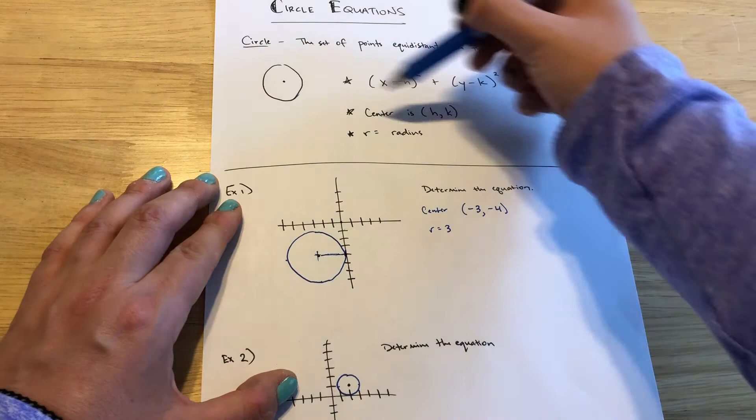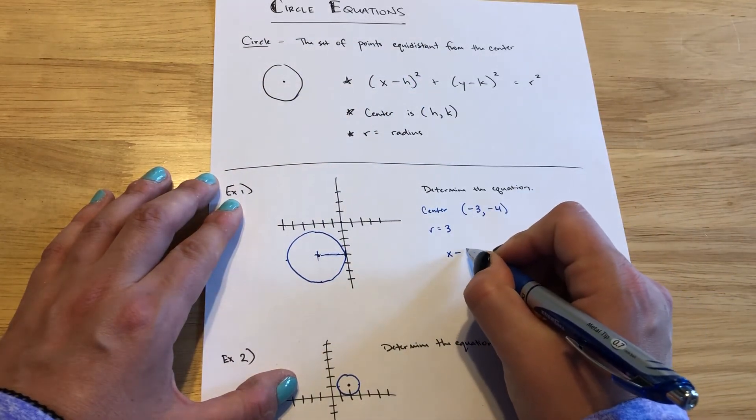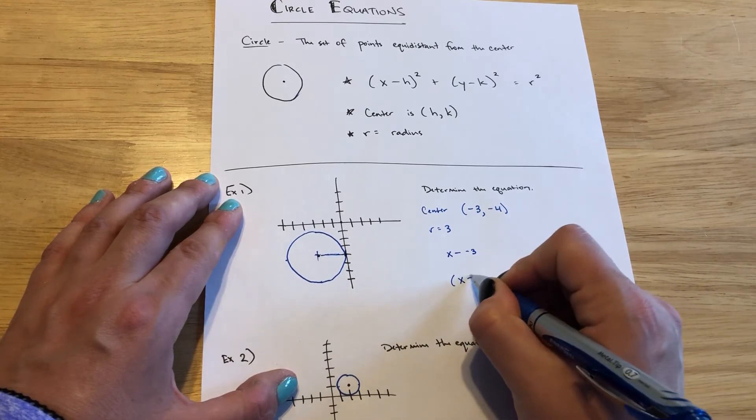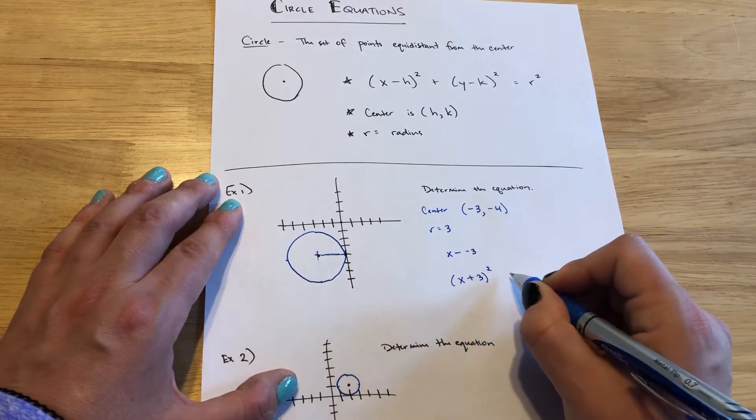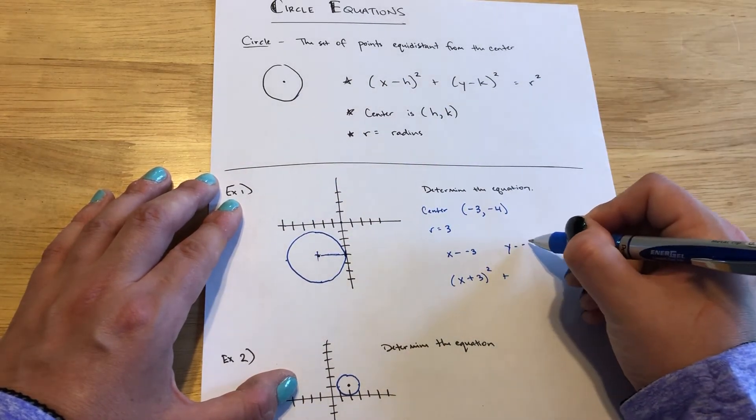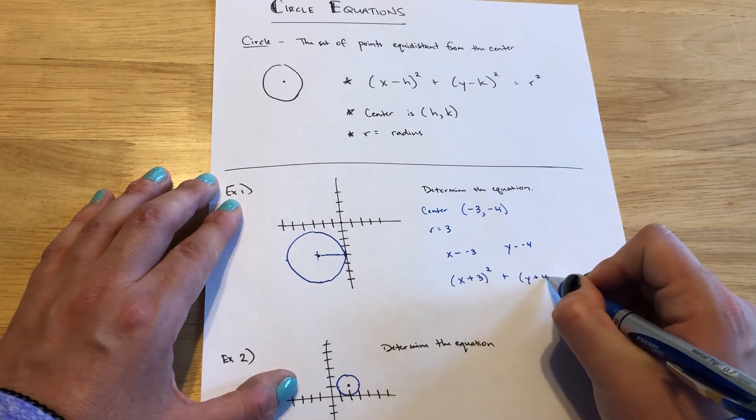So if we put this together in our formula, x minus h, x minus a negative 3, well that's a double negative. So it's really x plus 3 squared. And then when we add on the y minus k, y minus negative 4, again that's a double negative. So this is really y plus 4 squared.